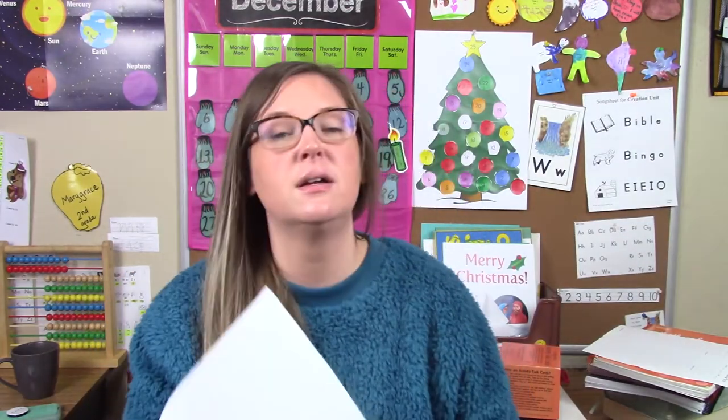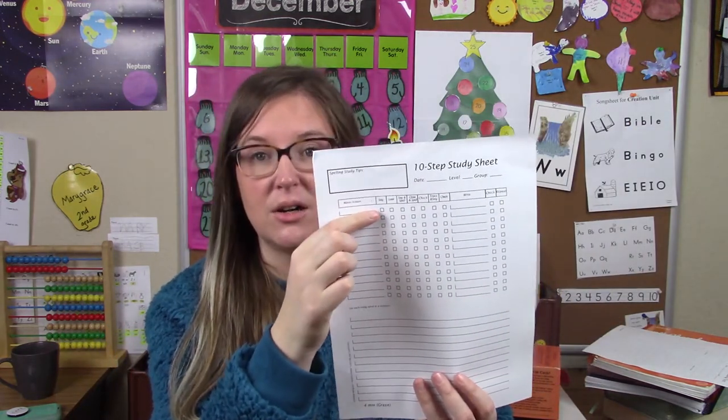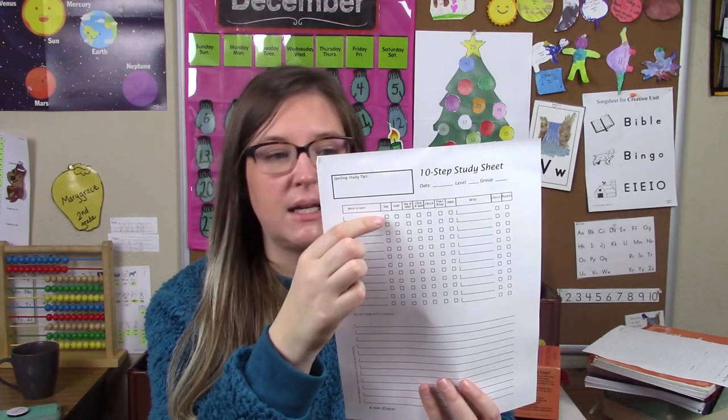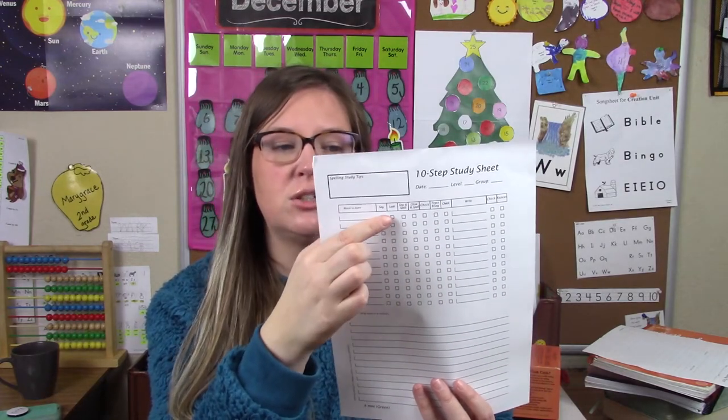You test for five minutes, and then for another five minutes you do the 10-step study sheet. So let's say she wrote blanket wrong — she'd write blanket here, then she would say it: 'blanket.' You'd study it with them because sometimes she would look at it and not get what was wrong.